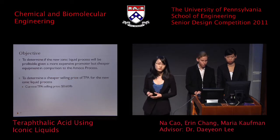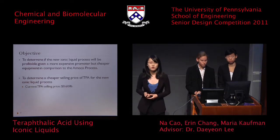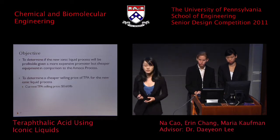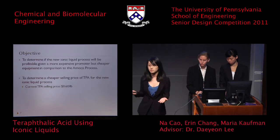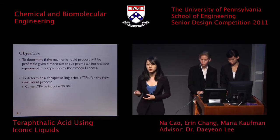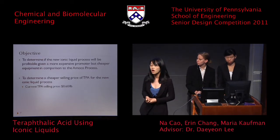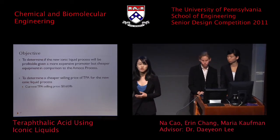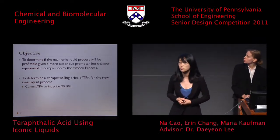However, there is a big trade-off: the ionic liquid is quite expensive, around $25 per pound. For our project, we determine whether this ionic liquid process will be profitable given a lower equipment cost but a higher promoter cost compared to the Amoco process. And if our process is profitable, how much lower can we sell TPA for and still keep our process profitable and competitive with other industrial processes?